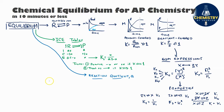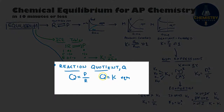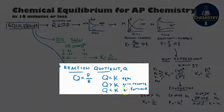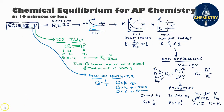If you have a set of concentrations or pressures and you're not sure if those are equilibrium values, you can test using something called the reaction quotient, capital Q. To solve for Q, plug the values into the equilibrium expression written the same way as before — you just can't call it K because you're not sure if those concentrations are the equilibrium ones. If Q equals K, the system is at equilibrium. If Q is greater than K, there are too many products and the reaction shifts in reverse. If Q is less than K, there aren't enough products and the reaction shifts forward.